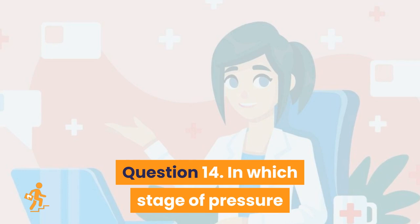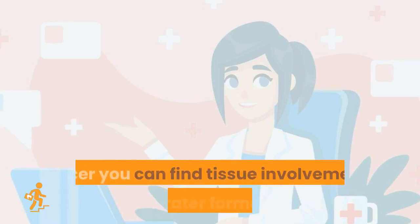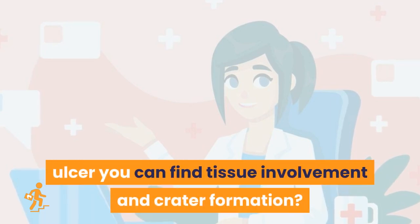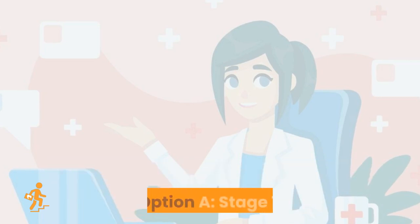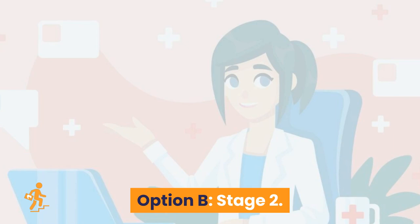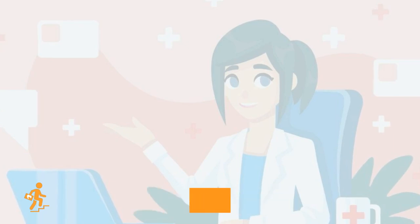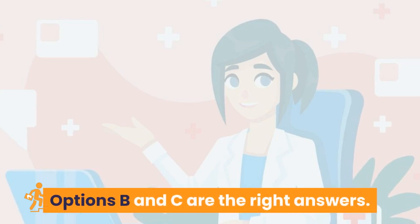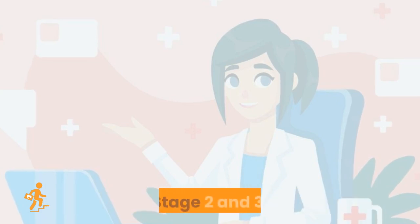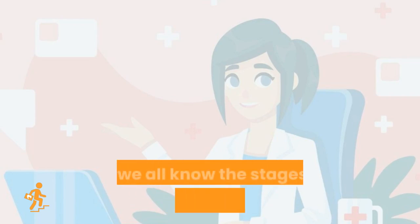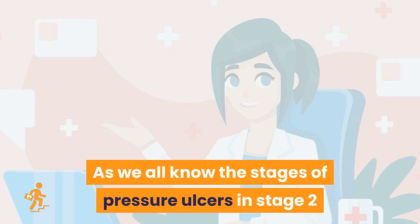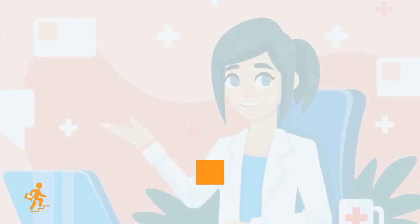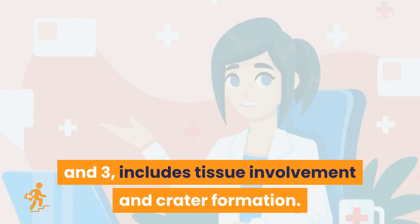Question 14. In which stage of pressure ulcer can you find tissue involvement and crater formation? Option A: Stage 1. Option B: Stage 2. Option C: Stage 3. Option D: Stage 4. Options B and C are the right answers: Stage 2 and Stage 3. In Stage 2 and 3 of pressure ulcers, tissue involvement and crater formation are present.